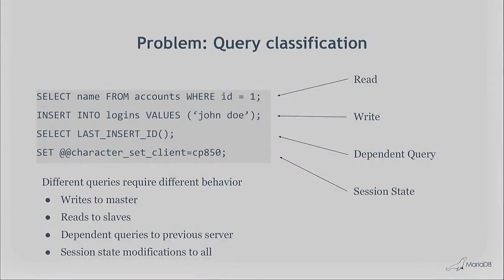Replaying transactions also has limitations — you can't simply replay any transaction. This leads into load balancing and query classification: you need to classify queries to know where to send them. For reads, you can send them to any server that's up to date and not heavily loaded. For writes, you need to know where to send them — sending a write to a slave that's replicating from a master will break things. Writes go to masters.